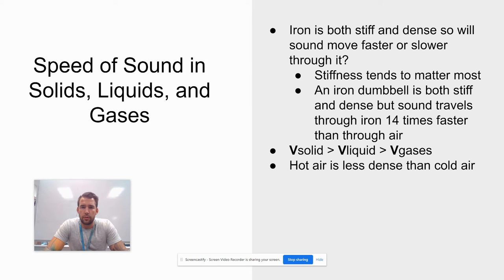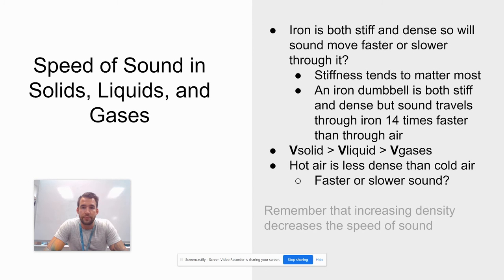Let's think about this case. Hot air is less dense than cold air. It's the same material, stiffness isn't changing, I'm just changing the density. So is sound going to be faster or slower through hot air, which is less dense? Well, remember that if I increase the density, it decreases the speed of sound. So if I'm decreasing the density with hot air, the speed of sound is actually going to go faster through hot air than cold air.